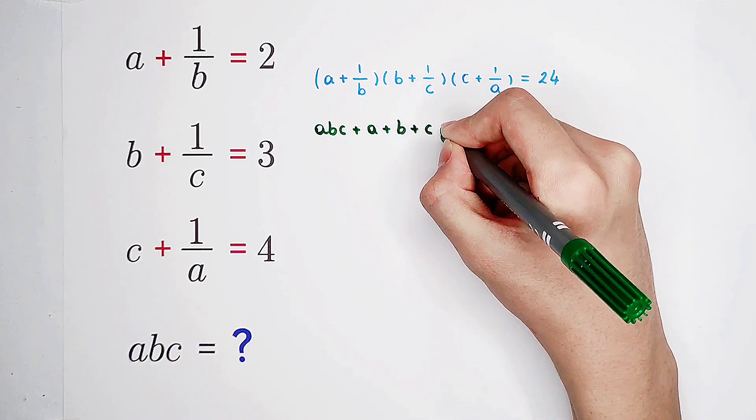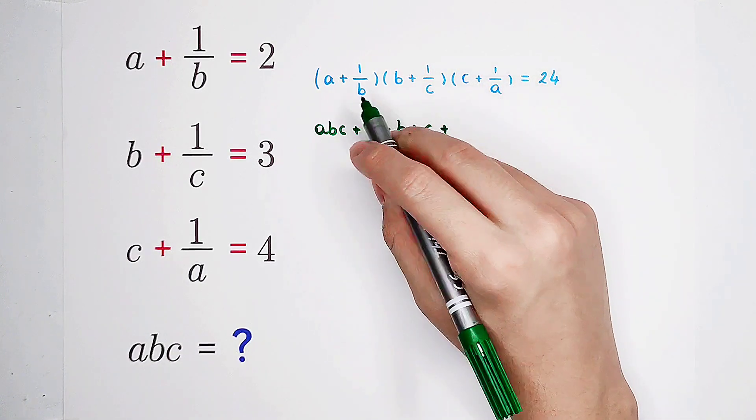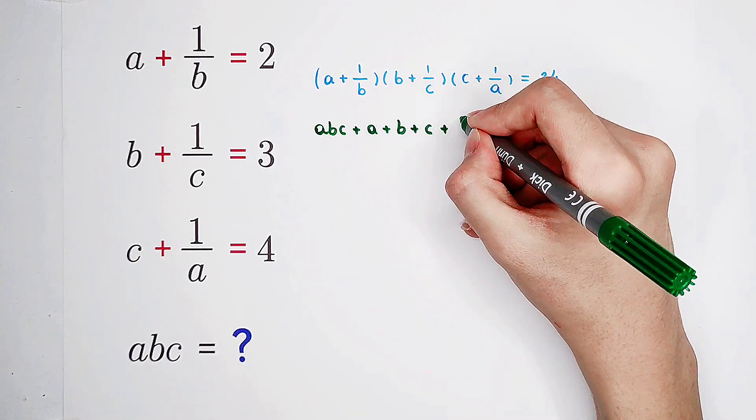And then we have c, and then plus one over b times b, then times one over a, we have one over a.